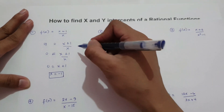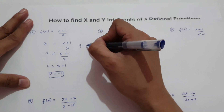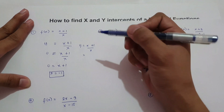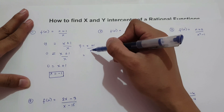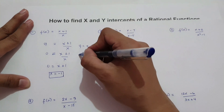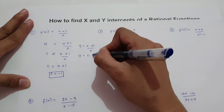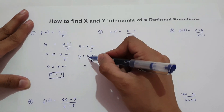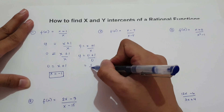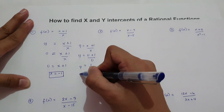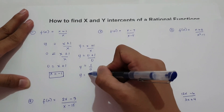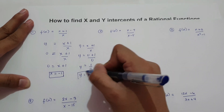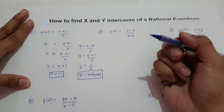To find y intercept, use y = (x + 1) / x and change x to 0. So y = (0 + 1) / 0, which is 1 over 0. Any number divided by 0 is undefined. So therefore, our y intercept is undefined.